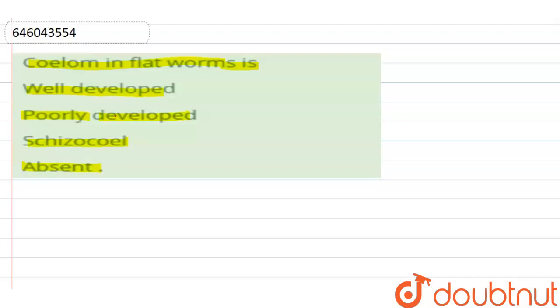So now let's first talk about coelom. We can say that coelom is a cavity present between body cavity and gut wall. This cavity is known as coelom which is lined by mesoderm.